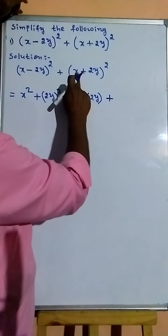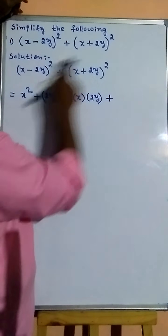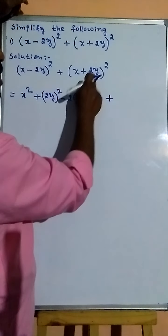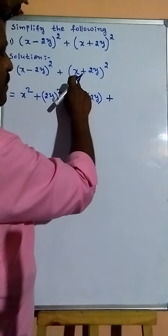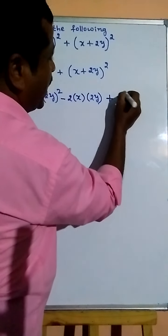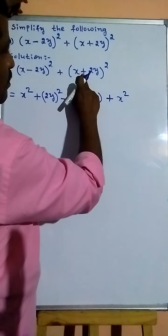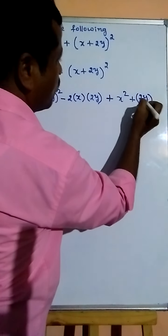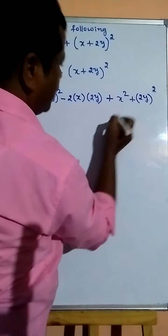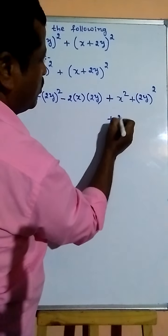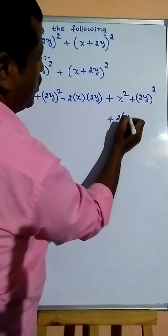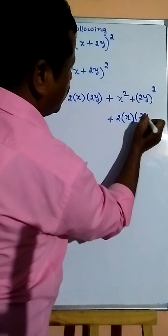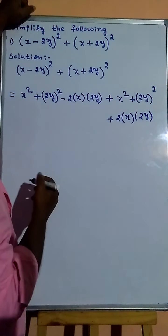This is also an identity: (a + b) whole square and (a - b) whole square. This is (a + b) whole square. Now, from x squared, from 2y whole squared, plus 2 into x into 2y.